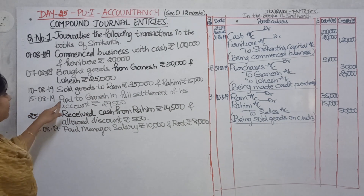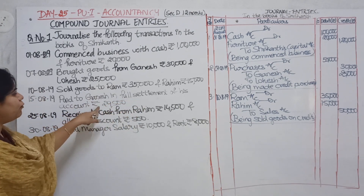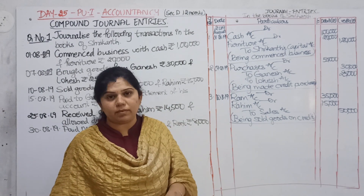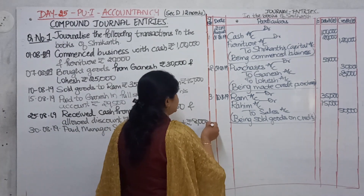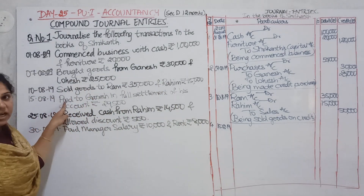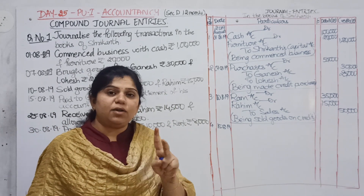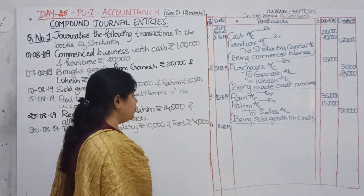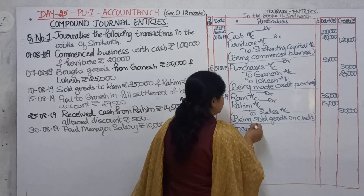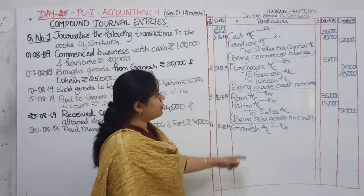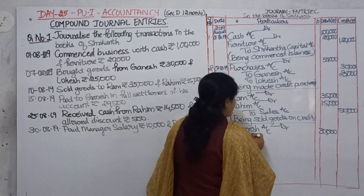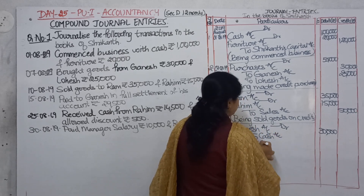Next transaction: paid to Ganesh in full settlement of his account of rupees 29,500. Whenever the word 'full settlement' comes, ultimately the discount account is coming. Write out the next journal entry for the date: 15th August 2019. When you use the word 'paid,' it means cash is going out. Who is the receiver? Ganesh is the receiver — so debit the receiver. Ganesh account debit for rupees 30,000. To cash account and to discount received account.